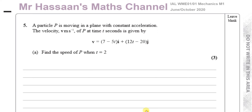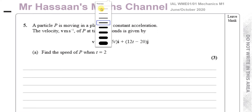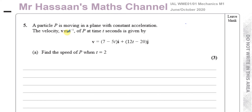This question is about vectors, and we're told that there is a particle P which is moving in a plane with constant acceleration — in two dimensions. The velocity V meters per second of P at time t seconds is given by V equals 7 minus 5T i plus 12T minus 20 j.